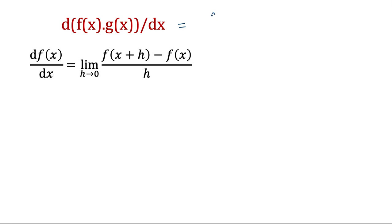So it will be: you write the first function as it is without differentiating and g prime of x. So this is just another notation for dg(x)/dx. If we write this, we would write f prime of x. So this is prime notation of differentiation and this is Leibniz notation.